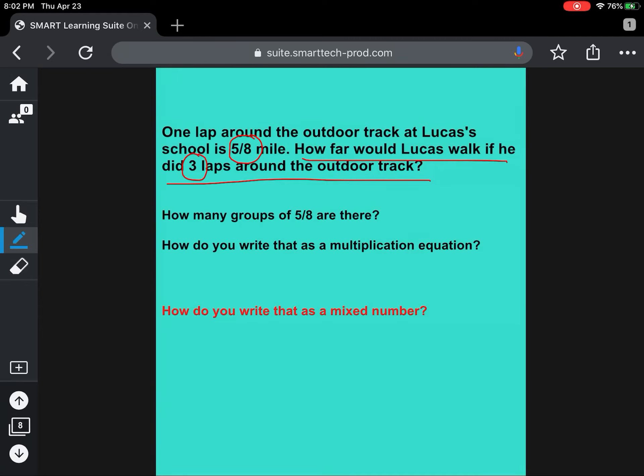How do you write that as a multiplication equation? Then, how do you write that as a mixed number? So let's break it down. How many groups of 5/8 are we talking about here? To find out how far Lucas will walk if he does three laps, we're talking about three groups of 5/8, or 5/8 three times.